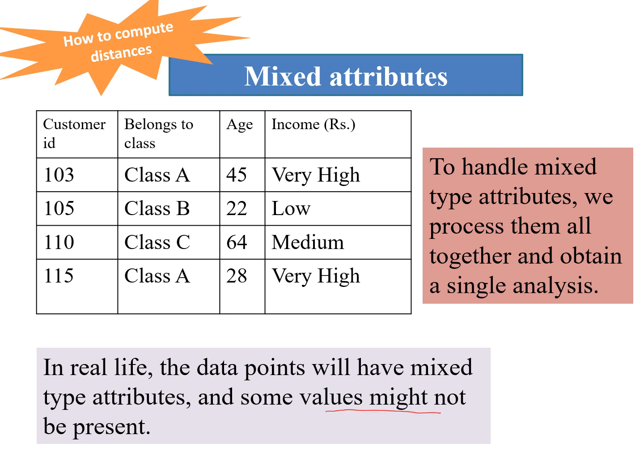So here in this example, we can see that this is a categorical attribute belongs to class. So we have different names of classes. We could also call it a nominal attribute.